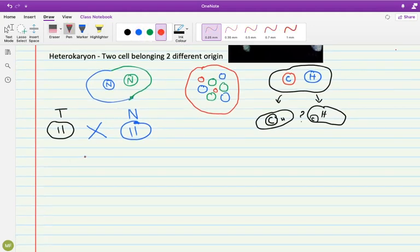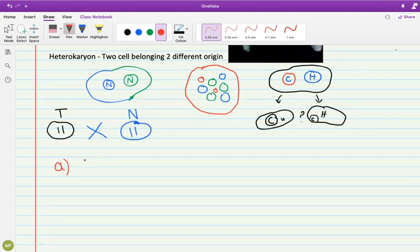Number one: there is a tumor formation. Upon the fusion, there is either tumor formation, or number B, which says the cells revert back to normalcy.